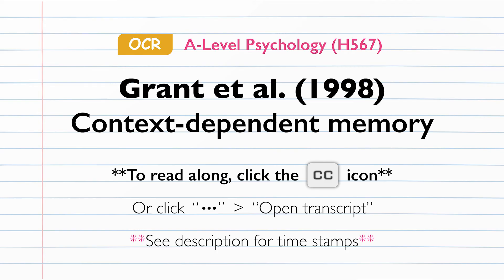Evaluations. The research carried out by Grant et al. was a laboratory experiment, so the participants knew that they were being studied. The experiment had a highly standardised procedure with equal numbers of participants in each condition, and many variables controlled to minimise extraneous variables. This meant that the study was high in internal validity and that it would be easy for other researchers to replicate the procedure. However, the fact that it was a laboratory experiment meant it was relatively low in ecological validity, since normal life is rarely as controlled as a laboratory setting.